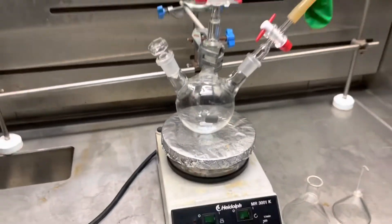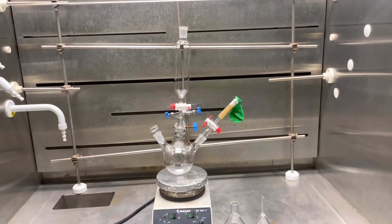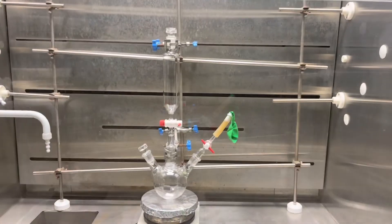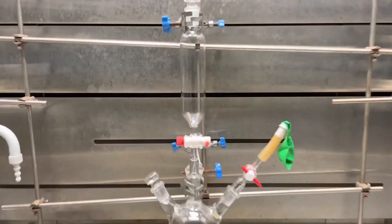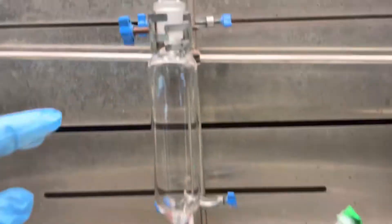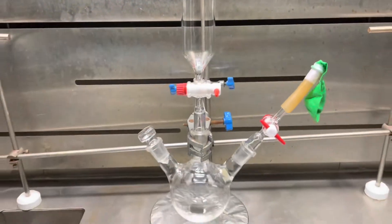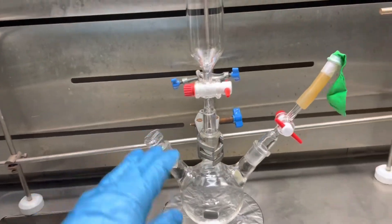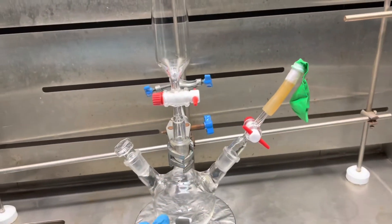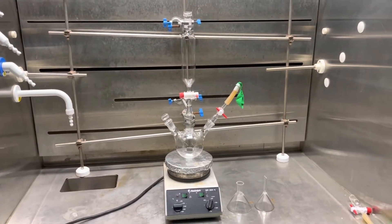Remember to add your stirrer bar in your round bottom flask before adding your other reagents. One additional clamp and stopper that you might require is a stopper at the top of your dropping funnel as well as a clamp at the top of your dropping funnel. Just a final check to remind you of all the aspects you require: you need a stopper, you need your balloon, you need the dropping funnel as well as your stirrer.